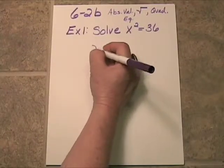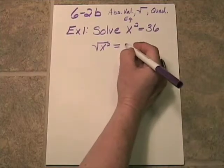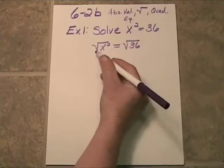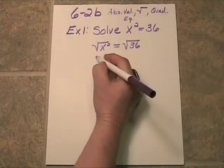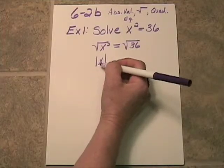So let's take a look. The square root of x squared is going to be equal to the square root of 36. Well, we know that the square root of x squared is equal to the absolute value of x. We know that when we do this, we'll get a positive number or zero.